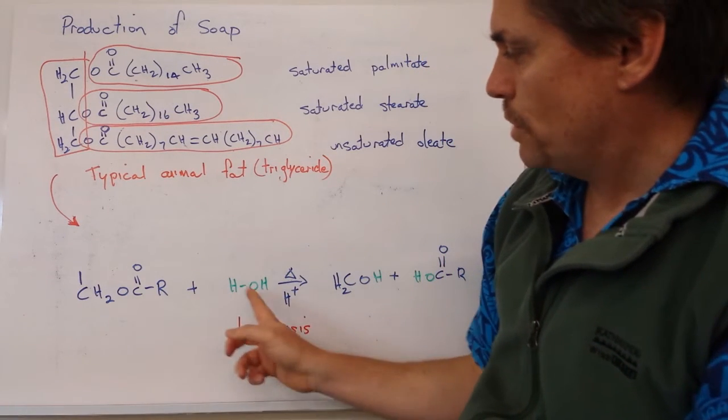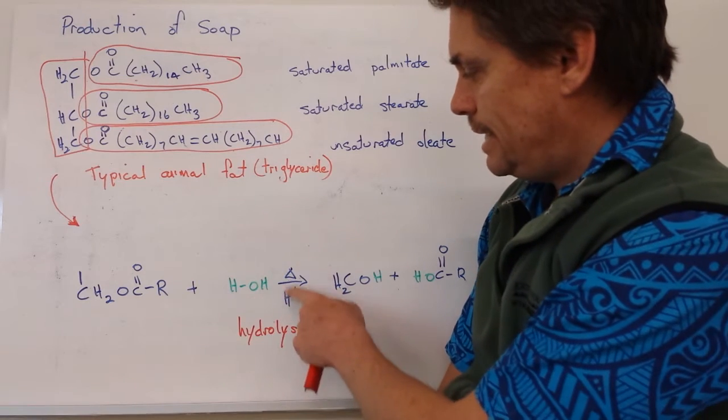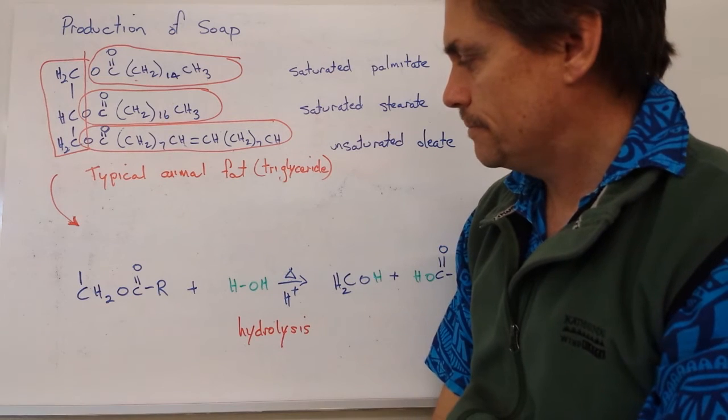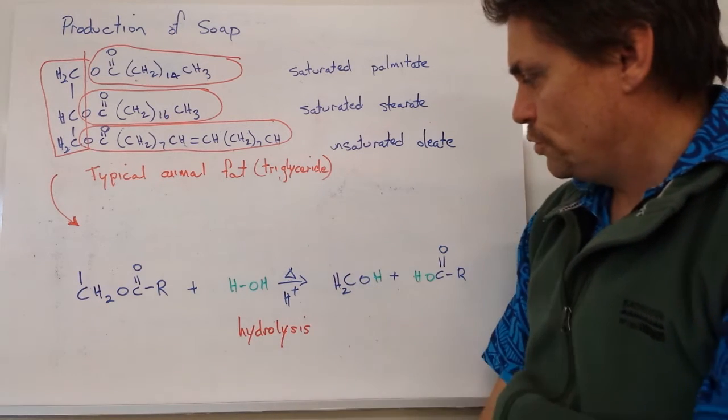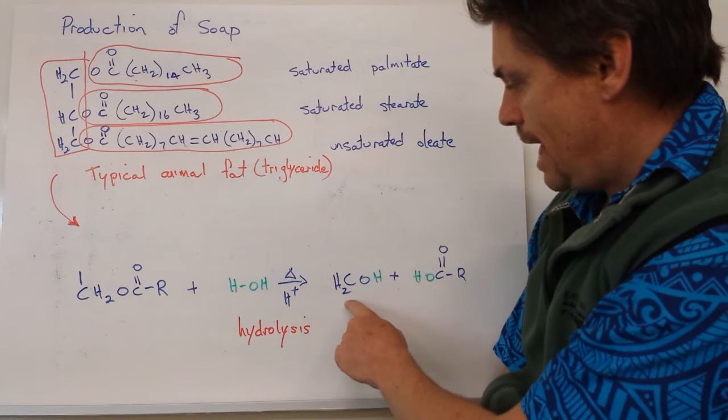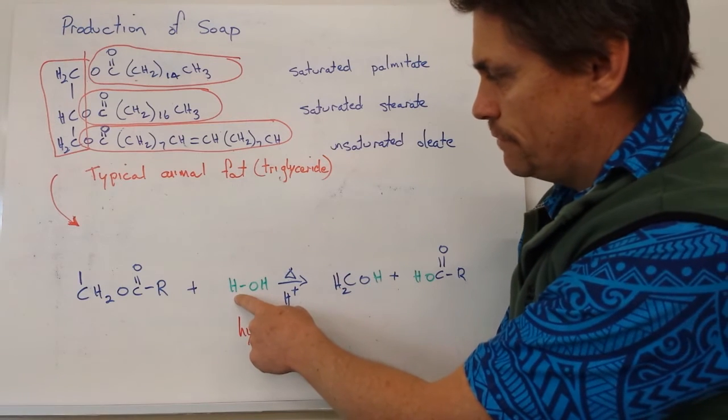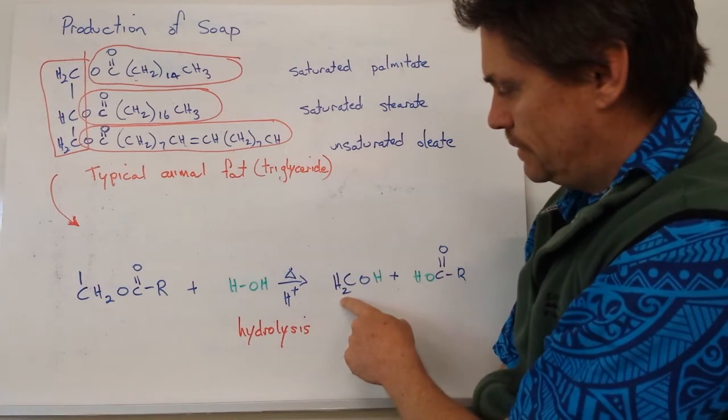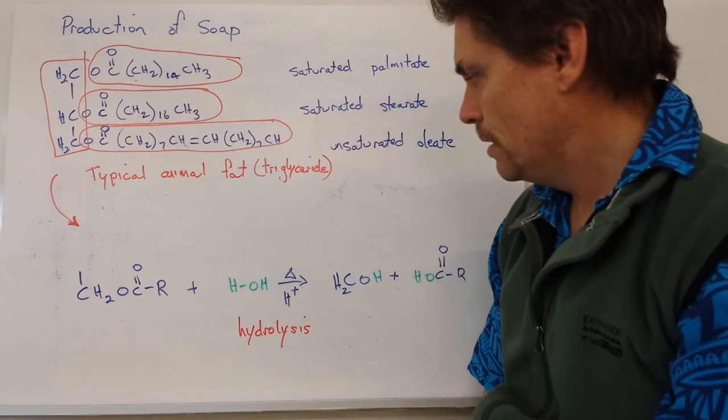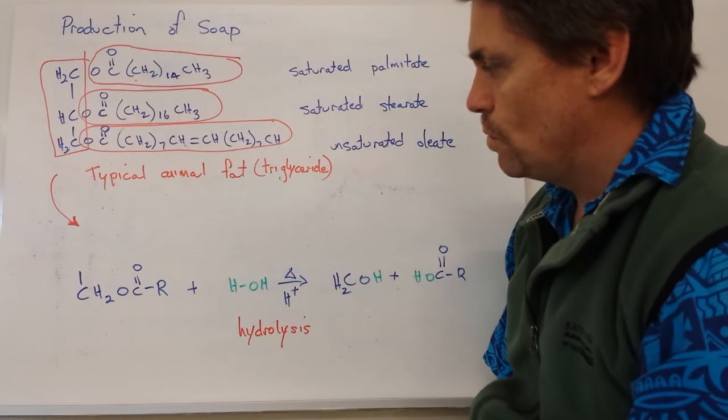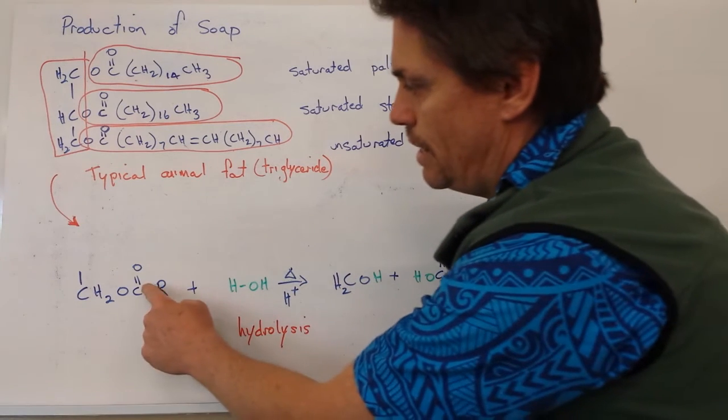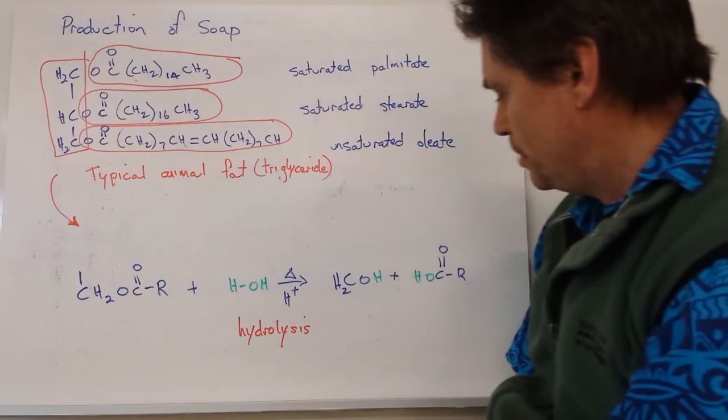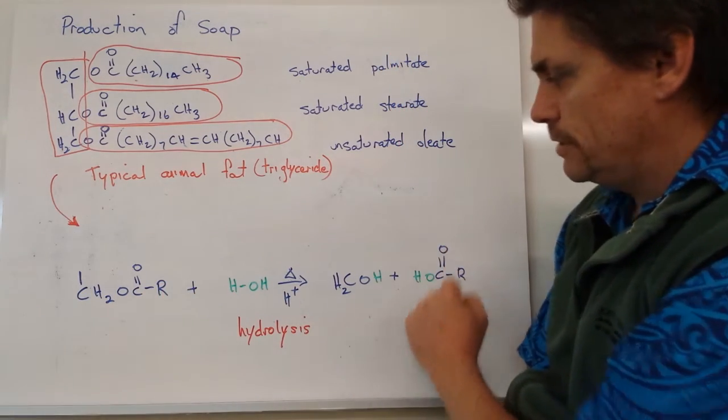And if we put this molecule in the presence of water, and we add heat, and we have an acid catalyst, we can break this ester linkage down. So, we can form two products. We can form our alkanol. So the hydrogen from our water will attach to the oxygen group there to give us our alkanol molecule.